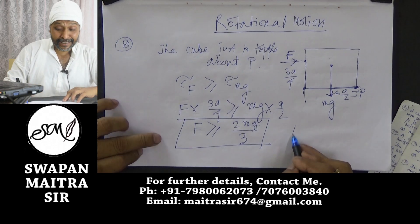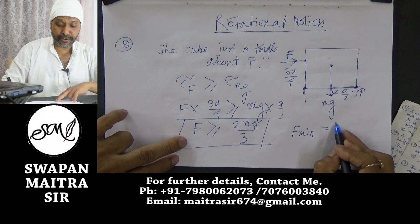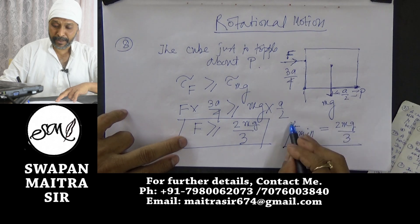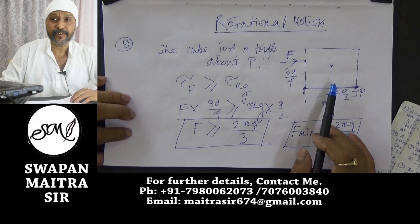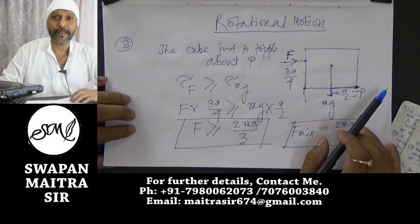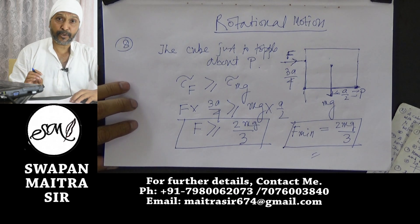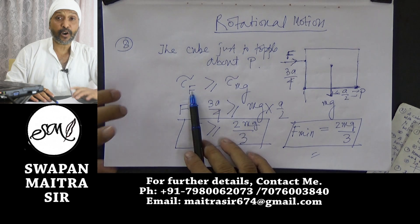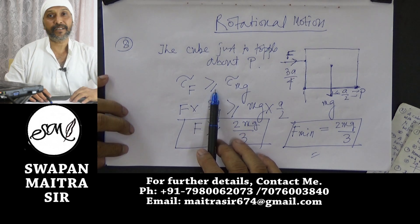Therefore, the minimum value of F equals 2Mg/3. When F minimum equals 2Mg/3, the cube is just toppling. The torque by F must always be greater than or equal to the torque by Mg.